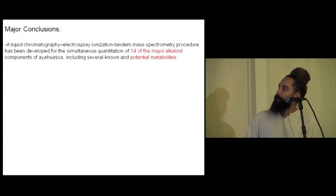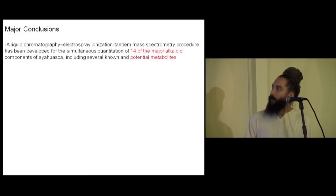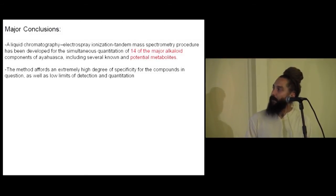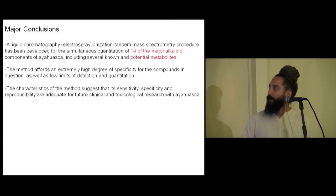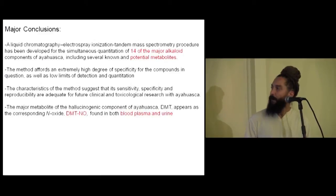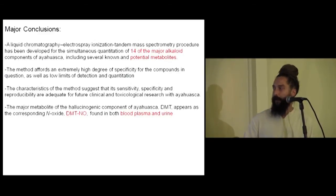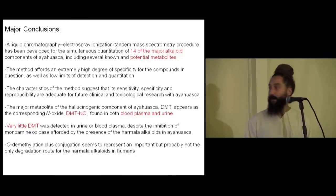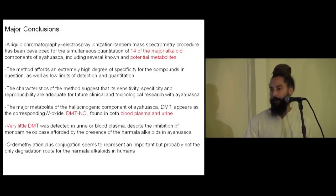So, some major conclusions from this part of the study. We developed this method to quantitate 14 of the major alkaloids, including a number of potential metabolites — suitable for any clinical or forensic research in ayahuasca. The major metabolite of DMT appears as the corresponding N-oxide, DMT N-oxide, found in blood, plasma, and urine. Very little DMT is detected in the urine or blood, despite the inhibition of monoamine oxidase. And O-demethylation plus conjugation represents an important pathway, but probably not the only one, for harmalol metabolism.